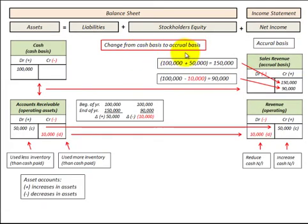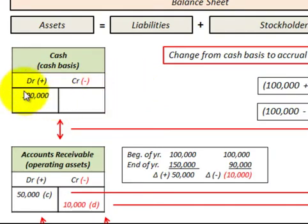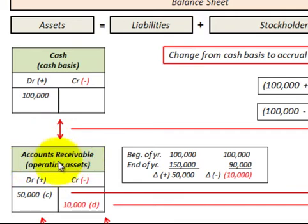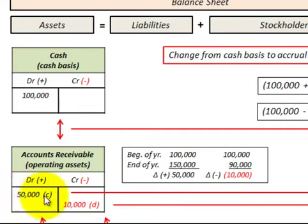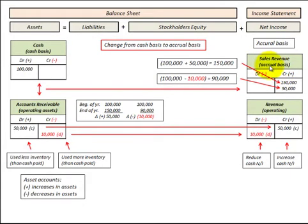Let's look at a detailed example of converting sales revenue from cash to accrual basis. We received $100,000 in cash for sales during the year — that's our cash basis amount. We also had accounts receivable: $100,000 at the beginning of the year and $150,000 at the end, giving us an increase in accounts receivable of $50,000.